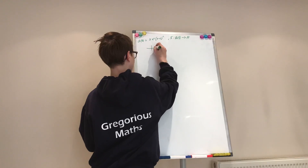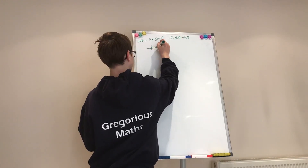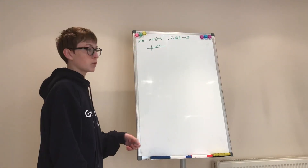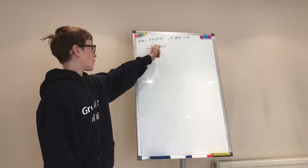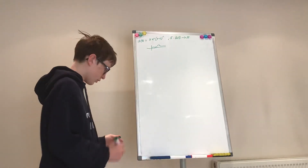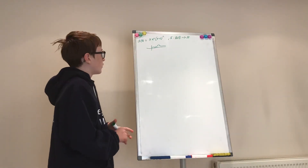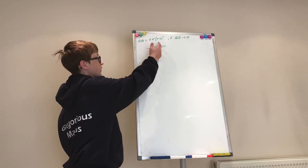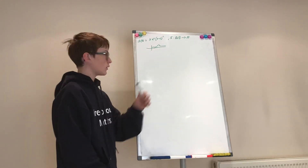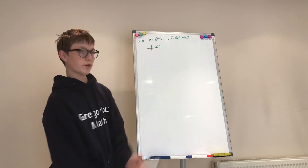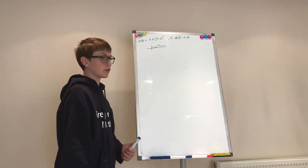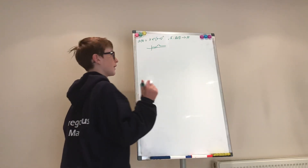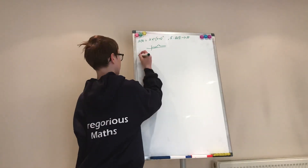It looks nearly like the constant function f(x) equals 1, but with a small deviation at the top. So what we want to do with homotopy is to continuously deform this function into f(x) equals 1 — or let's call it g(x). One way we can do it is by constructing a family of functions.